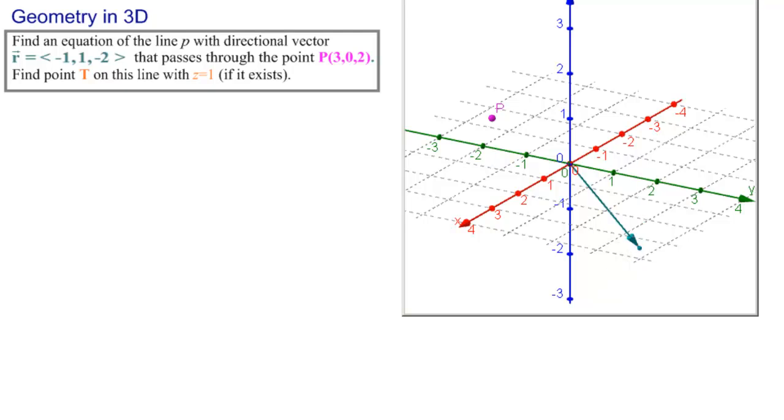And then the directional vector, so that's r. And what we want is an equation for the line parallel to r that passes through P.